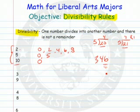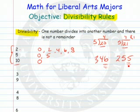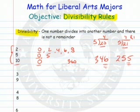346 is not divisible by 5 because it does not end in a 0 or 5. If I look at 255, it's not divisible by 2 because that's not a 0, 2, 4, 6, or 8, but it is divisible by 5. And if I look at 360, it is divisible by 2 because it ends in a 0, divisible by 5 because it ends in a 0, and divisible by 10 because it ends in a 0.